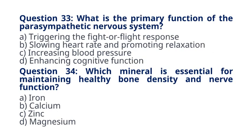Question 33. What is the primary function of the parasympathetic nervous system? A. Triggering the fight-or-flight response. B. Slowing heart rate and promoting relaxation. C. Increasing blood pressure. D. Enhancing cognitive function. The correct answer to question 33 is option B. Slowing heart rate and promoting relaxation. Explanation: The parasympathetic nervous system is responsible for promoting rest and relaxation, slowing heart rate, and conserving energy.